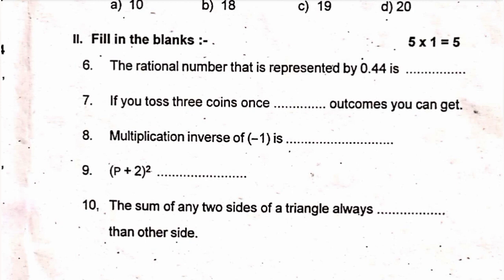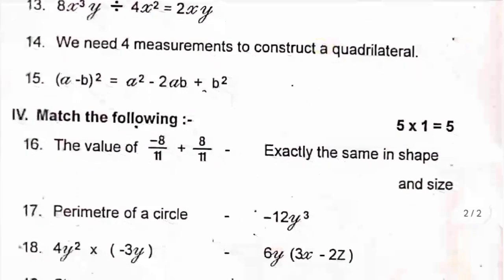Roman number three, write true or false. Eleven, the biggest rational number is zero. Twelve, zero and minus one are respectively additive inverse of a rational number. Thirteen, 8x cube y divided by 4x square equal to xy. Fourteen, we need four measurements to construct a quadrilateral. Fifteen, a minus b the whole square equal to a square minus 2ab plus b square. Roman number four, match the following. Sixteen, the value of minus eight by eleven plus eight by eleven.